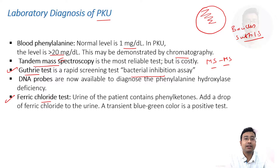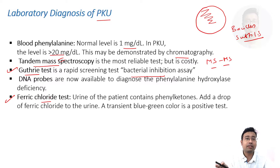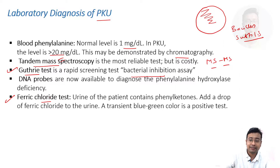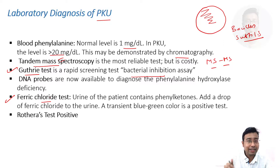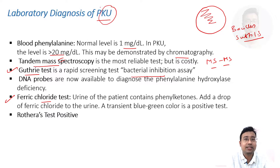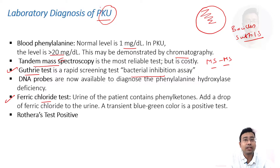In a moderate setup, we can do chromatography — paper, thin layer, liquid chromatography, or HPLC. In reference labs and big setups to confirm, we must do tandem mass spectrometry. Since it is phenylketonuria, the name already contains 'ketonuria' because phenylketones are formed and excreted. So a test for ketone bodies will also be positive — remember Rothera's test is positive.